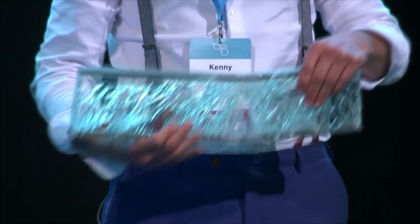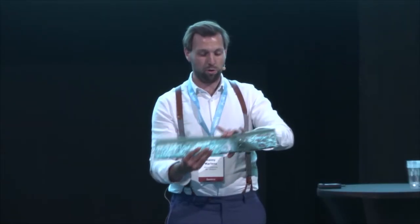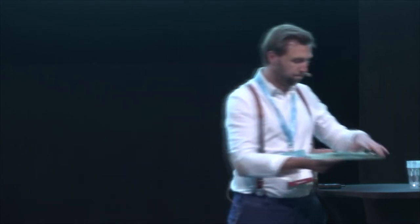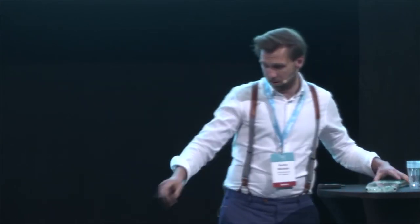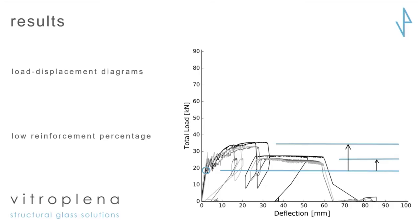Then we had reinforcement fracture — we really had a plastic hinge here. You could see that the reinforcement really stretched out and just ruptured. But as you see on this curve, we have even another redundant phase, because it was only broken at one spot. As the system is still a multi-span system, the loads were just redistributed again. Basically, every beam only failed when we had two reinforcement ruptures — at the central support or in the spans.